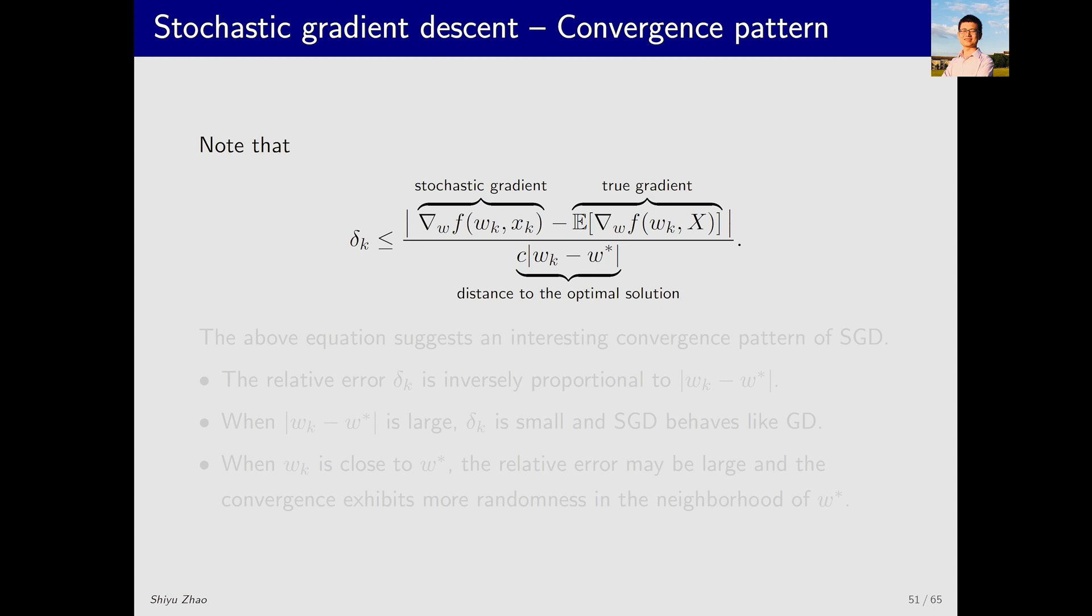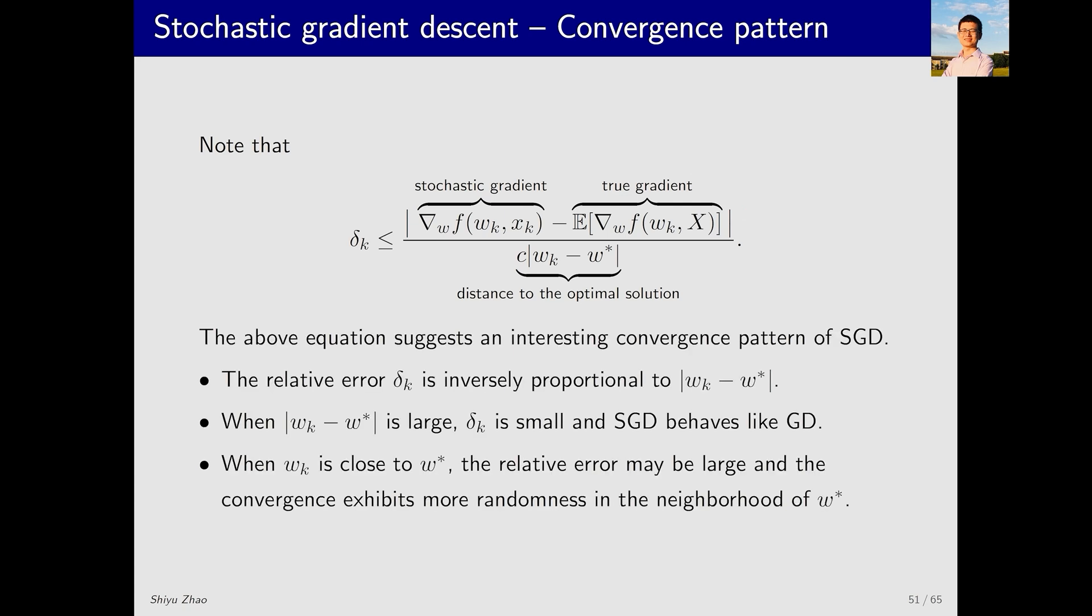Let's take a closer look at this equation. What is the numerator? The numerator contains two terms, the stochastic gradient and the true gradient. So the numerator is their absolute error. The denominator is c times the absolute value of w_k - w*. What is this? This is the error between w_k and w*. So what can we learn from this equation?